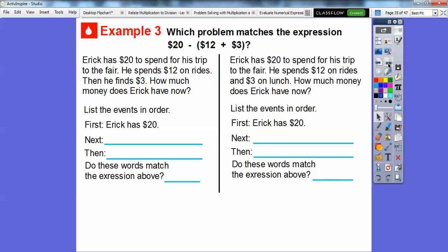So which problem matches the expression here? $20 minus parentheses $12 plus $3. Well, let's go ahead and figure this out right here. It'll help this problem go a lot easier. In the next lesson, we'll learn that we have to do parentheses first. So let's do the parentheses first here. This is going to be 12 plus 3 is 15. So this is 20 minus 15 right here, which is going to give us $5. So our answer has to be $5. So let's just go through the problem and see which one gives us $5.